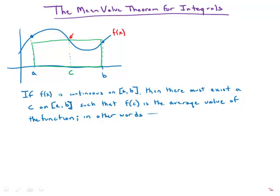So the mean value theorem is about this scenario. The mean value theorem says if f of x is continuous on [a, b], then there must exist a value c on the interval such that f of c is the average value of the function.